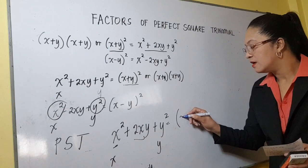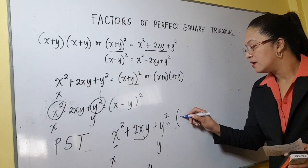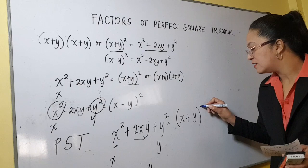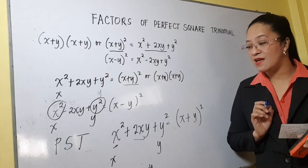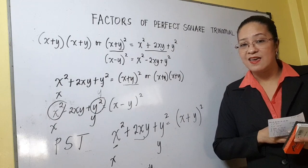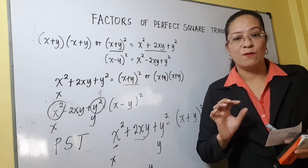At ang factors niya ay napakasimple: get the square root — x, then y — and then get the sign of the middle term. So the sign is plus or positive. And just put a square dun sa taas, kasi nga ang sabi natin, the factors of a perfect square trinomial is a square of a binomial. Kaya lang guys, titignan nyo muna mabuti yung given trinomial kung ito ba ay perfect square trinomial. So let's try to practice.